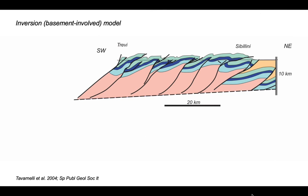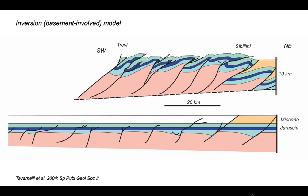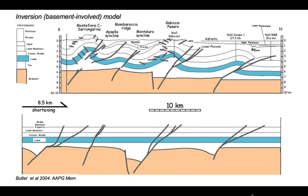Here's a cross-section through a very similar part of the thrust belt drawn by Enrico Tavarnelli and others some ten years later. This one involves basement rocks — the pink rocks beneath the thrust belt — and the largely Jurassic structure. When you restore this cross-section it's an inversion model, showing how the surface structures that stack up the Jurassic rocks root down into basement faults that started life as bounding faults to half-graben. The shortening this represents is just 41 kilometres. Going out to the Adriatic coast on the east coast of Italy, a cross-section with fold structures at outcrop passing down into inverted half-graben or graben structures at depth shows only about 8 kilometres of shortening.